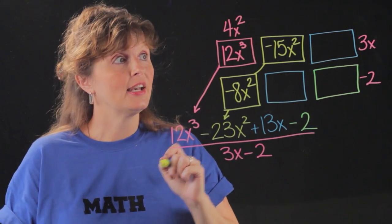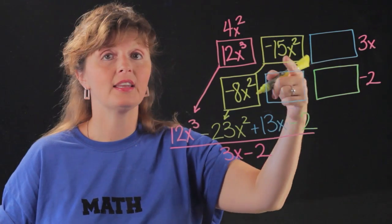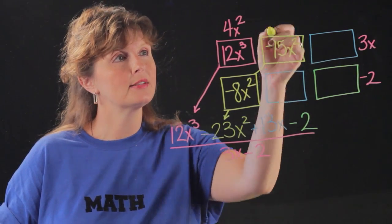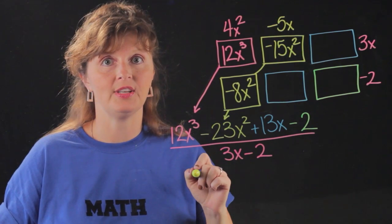So then I look and 3x times something gives me -15x². 3x times -5x gives me -15x².